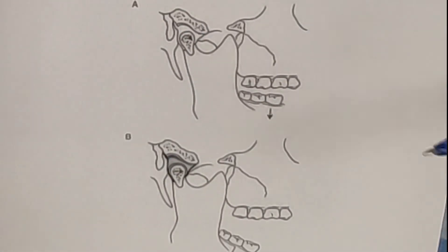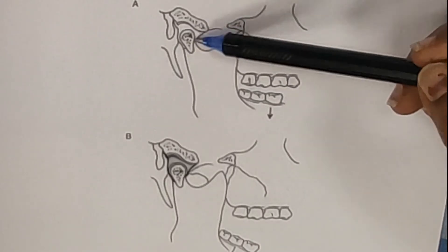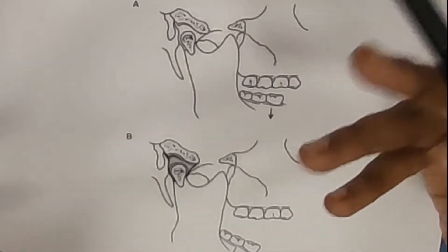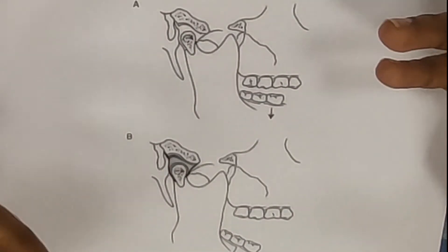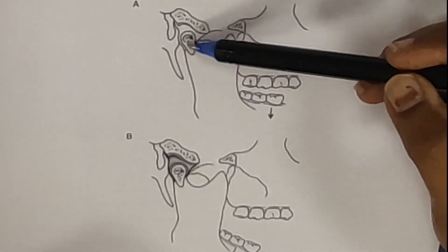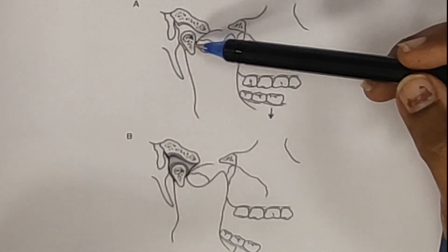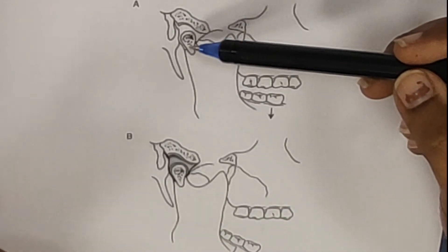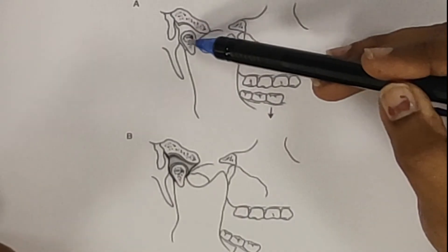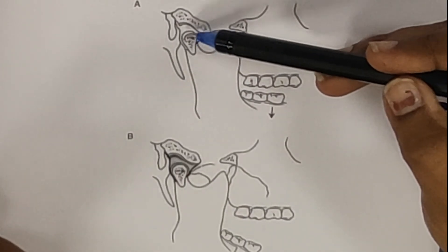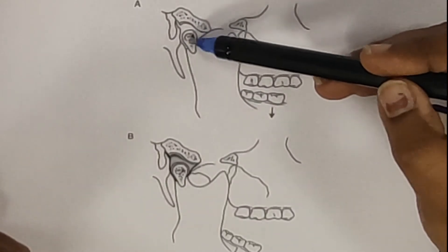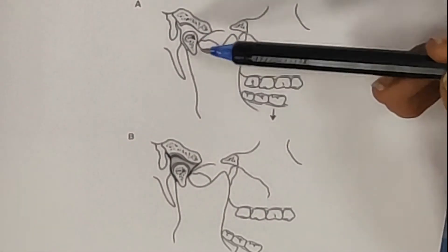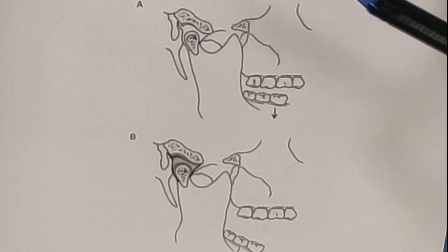For mouth opening and closing, most of the theory regarding temporomandibular movements is a conceptual framework — it is all theoretical, and sometimes it is difficult to predict what actual movements are happening. To simplify it, the joint movements happen in two joints: a lower joint and an upper joint. One theory says movement first happens in the lower joint — between the disc and the mandible — and then later in the upper joint.